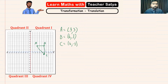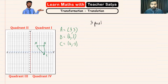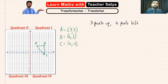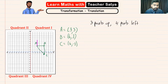Now let's say the question is telling us to translate this original shape 3 points up and 4 points left. So what it means is all of the points are going to move 3 points up and 4 points left. Let's start with point A — going 3 up and then 4 points left — and we have found the new point of A.